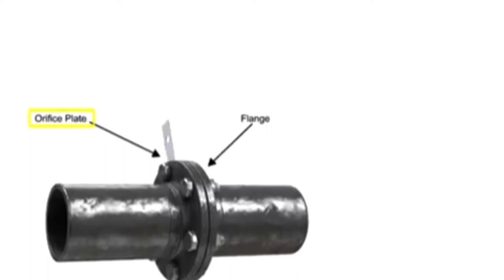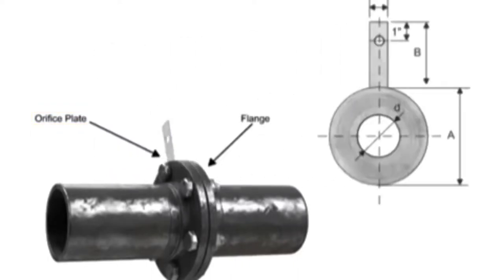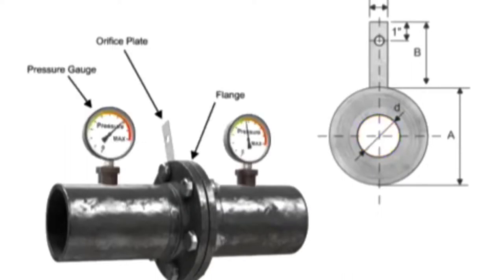The orifice plate of the flow meter is comprised of a circular metal disk with a specific hole diameter that reduces the fluid flow in the pipe. Pressure taps are added on each side of the orifice plate to measure the pressure differential.